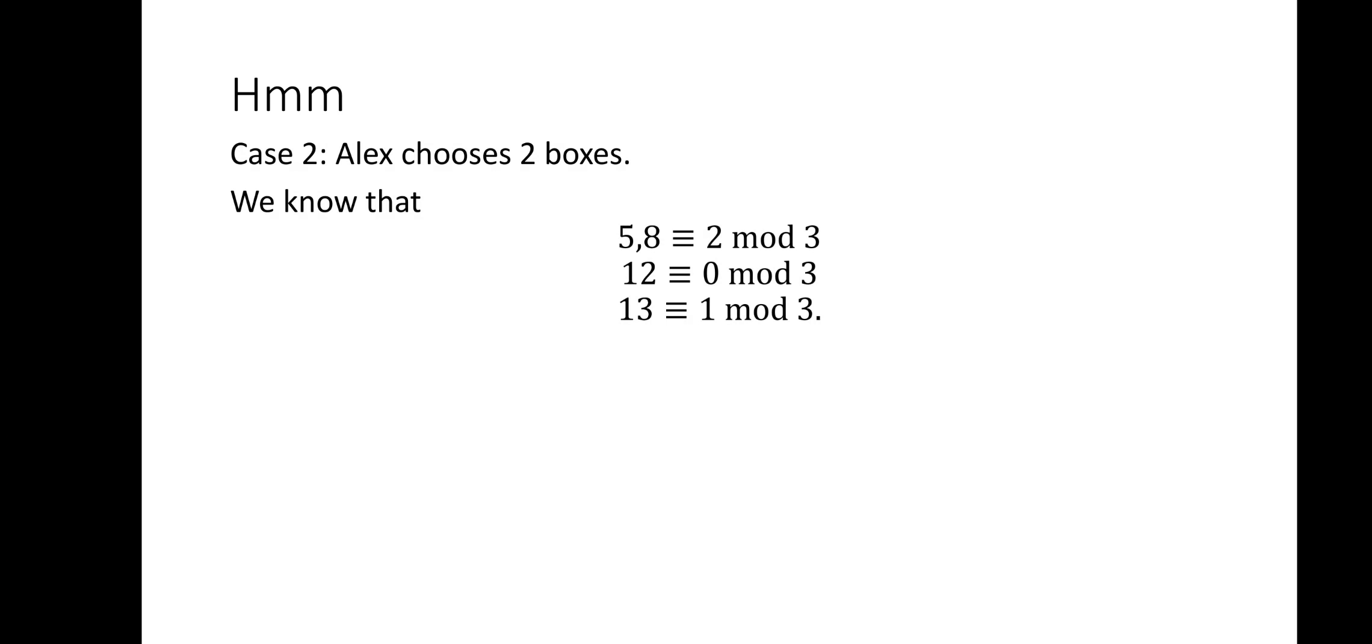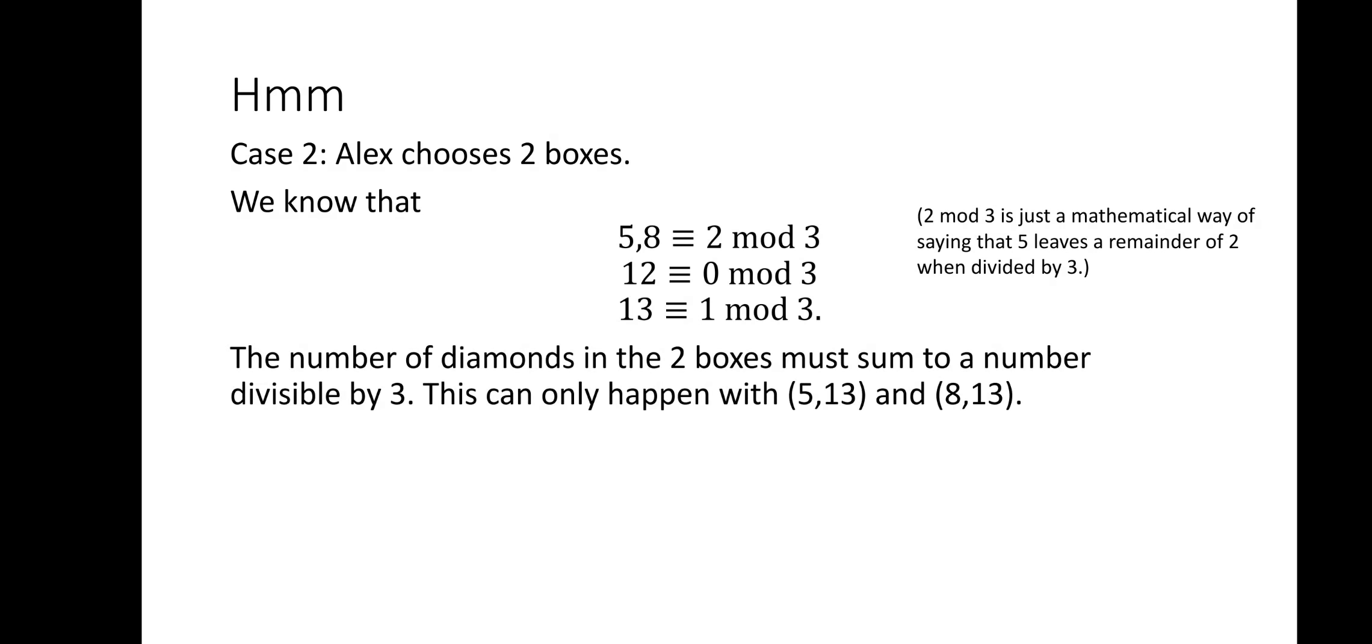Case 2, Alex chooses 2 boxes. We know that 5 and 8 are 2 mod 3, 12 is congruent to 0 mod 3, and 13 is congruent to 1 mod 3. 2 mod 3 is just a mathematical way of saying that 5 leaves a remainder of 2 when divided by 3.